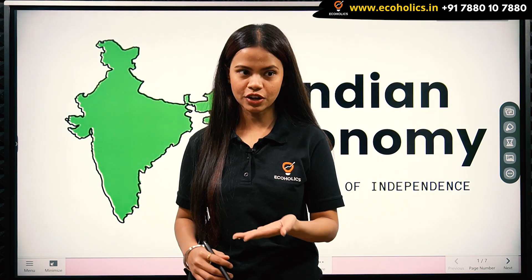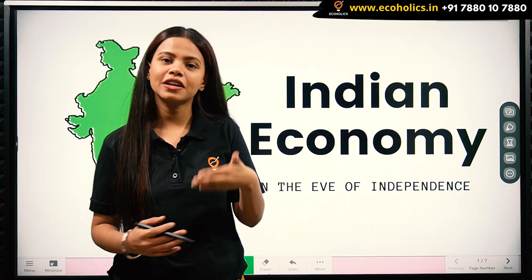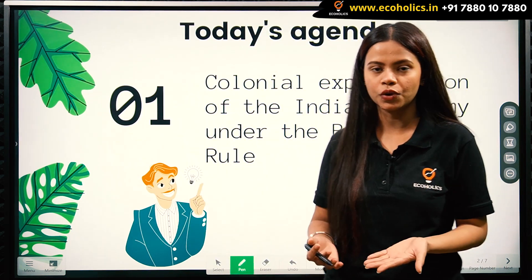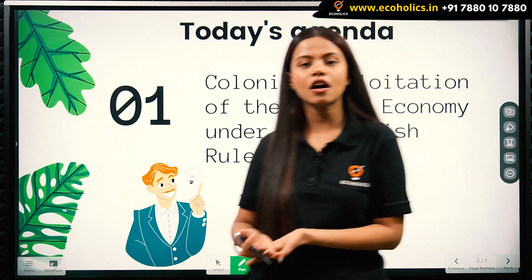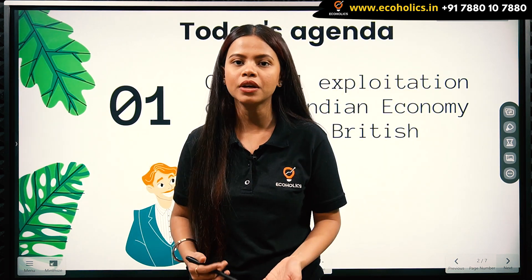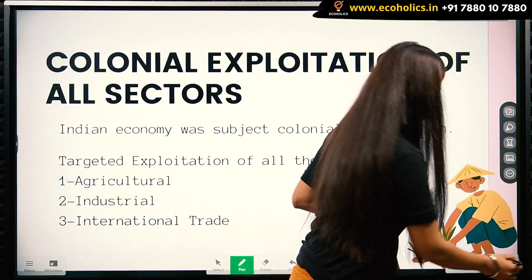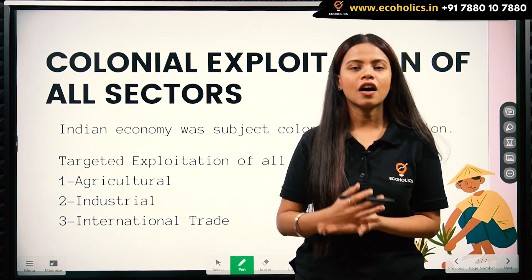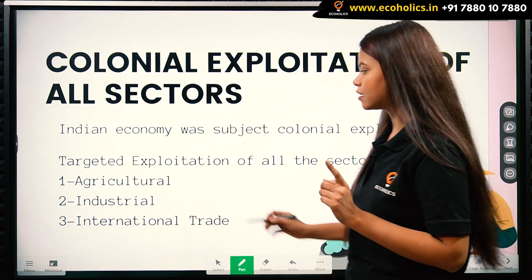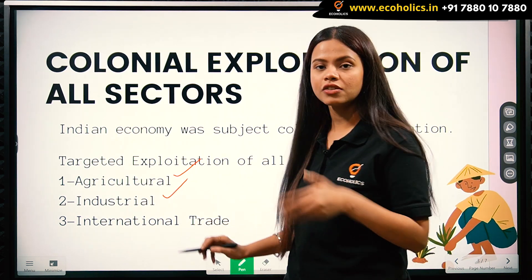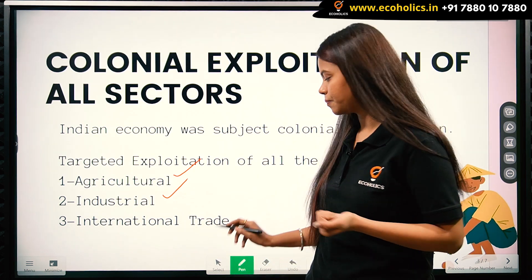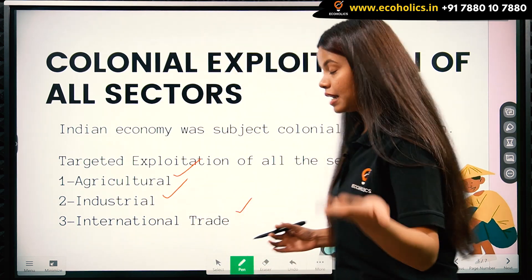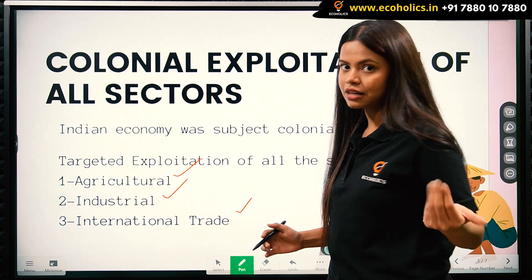Hello and welcome to Ecoholics. In this video we'll be discussing the state of the Indian economy on the eve of independence. We'll be learning how, under British rule, different sectors such as agriculture, industrial, and international trade of the Indian economy were exploited. The Indian economy was subject to colonial exploitation, which led to targeted exploitation of all three sectors.